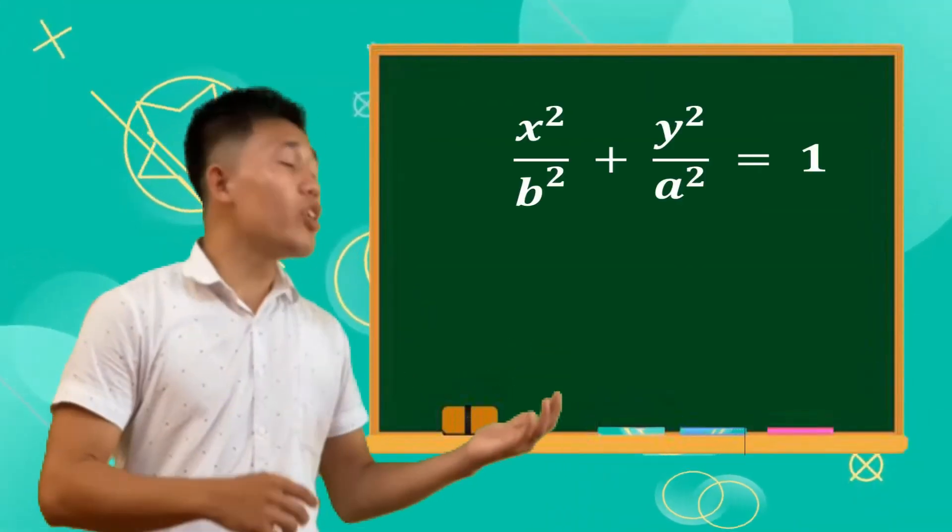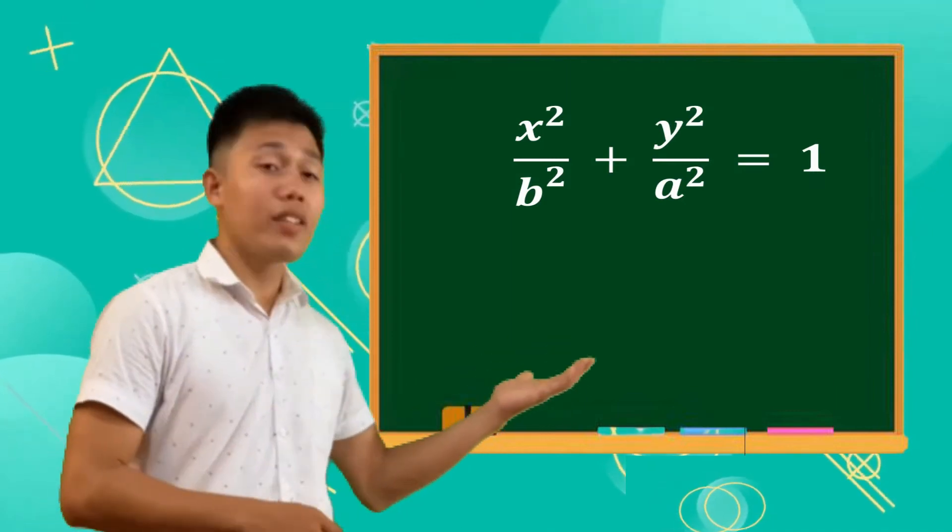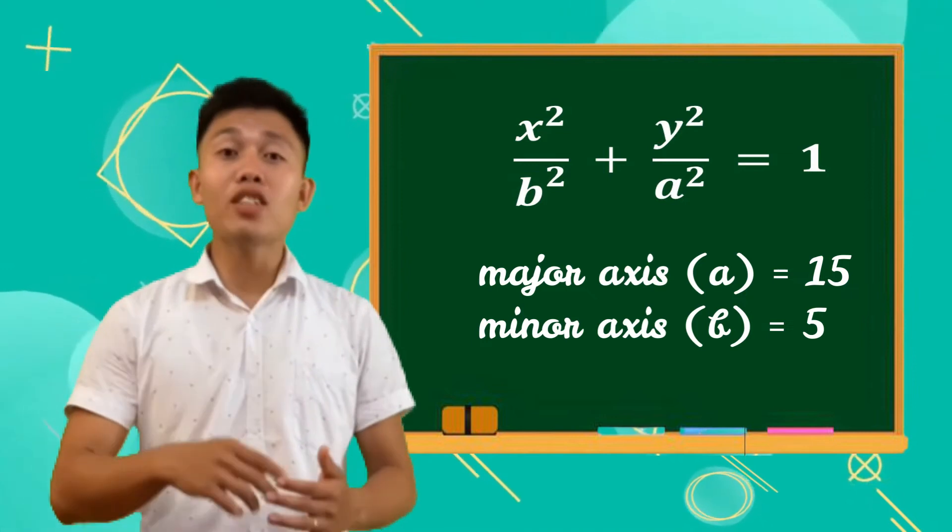From the illustration, since it is vertically oriented and the center is at the origin, then our equation is x squared over b squared plus y squared over a squared equals 1. And the major axis equals 15 and the minor axis equals 5.